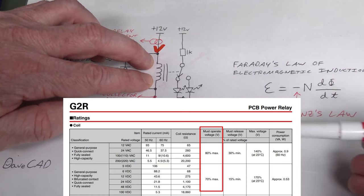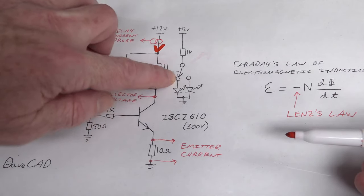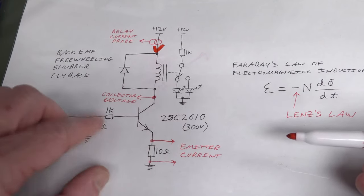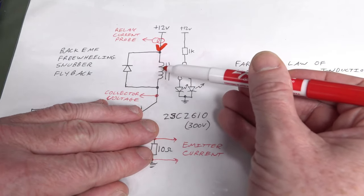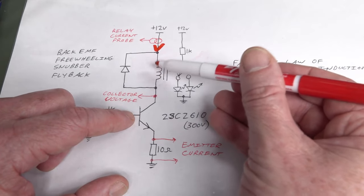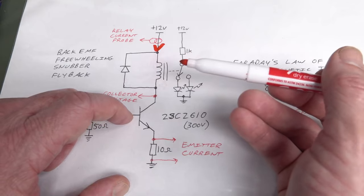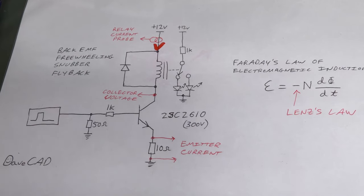There's a minimum turn-on voltage — maybe 80% of the rated voltage — and as soon as it hits that the relay switches on. You keep that current flowing to hold the relay. But when you switch the relay off and ground the base, there's no more current flowing. The relay switches off, but the magnetic field built up in the relay coil has to go somewhere — it doesn't vanish instantly.